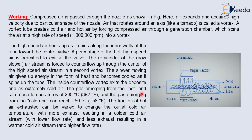The gas emerging from the hot end can reach up to a temperature of 200 degrees Celsius, and gas emerging from the cold end can reach up to minus 50 degrees Celsius. The fraction of hot air exhausted can be varied to change the outlet cold air temperature — with more exhaust resulting in a colder air stream and less exhaust resulting in a warmer cold air stream at a higher flow rate.